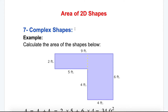For the perimeter, you need to add the sides around — like 9 plus 6 plus 4 plus 4 plus 5 plus 2; the answer would be in feet. But for the area, I cannot calculate it here unless I split it into two shapes.